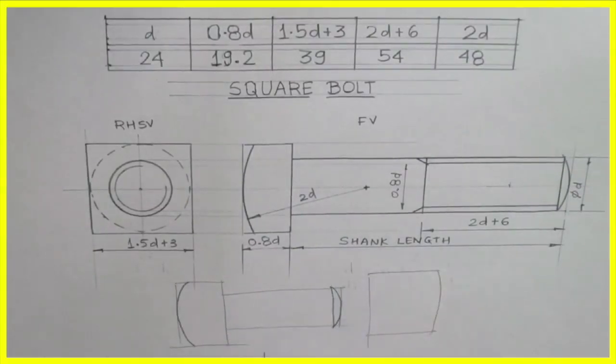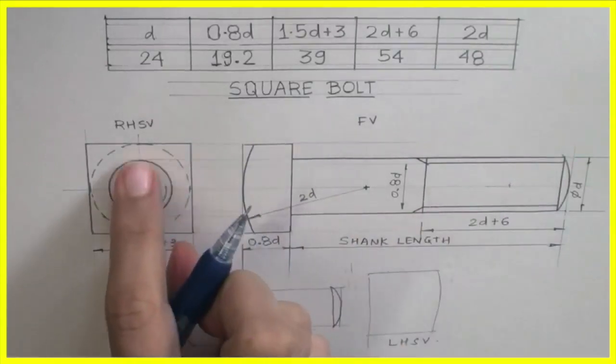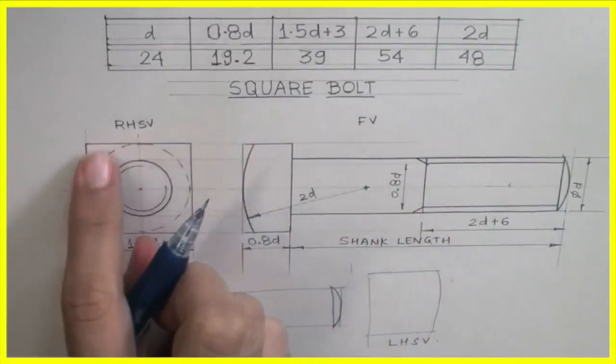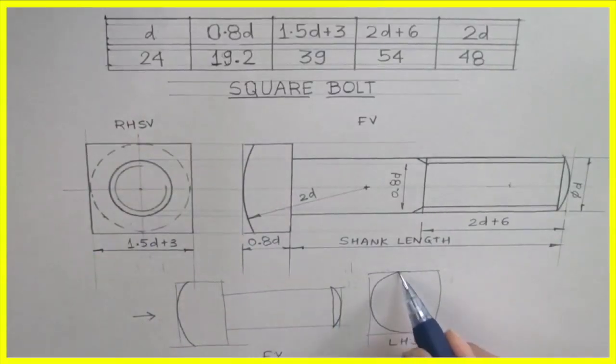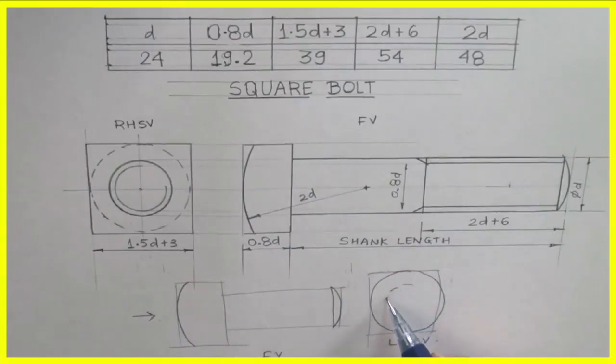Now let's say if I take left-hand side view. Front view, left-hand side view. Now see, in this case I am seeing it from the right, so I can see threading. So that's why threading is dark. I can't see chamfering, so that's why it is dotted. But if I see left-hand side view, then chamfering will be dark and threading will be dotted.